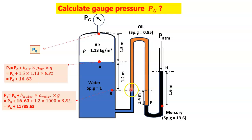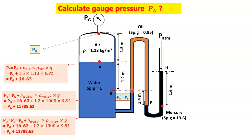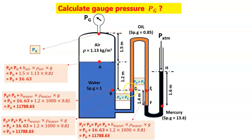Drawing a horizontal reference line, pressure is the same at the same horizontal level within a continuous fluid. Since water is continuous, pressure at point D equals pressure at point B: Pd = Pb = Pg + 11788.63. Similarly, since oil is continuous along the next horizontal reference, pressure P at that level equals Pd, so P = Pg + 11788.63.